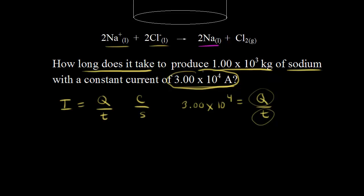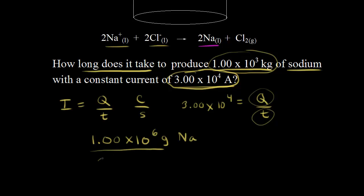Let's find the charge. We start with the mass of sodium: 1.00 × 10³ kilograms, which equals 1.00 × 10⁶ grams. Next, we find the moles of sodium by dividing by the molar mass of sodium, which is 22.99 grams per mole. The grams cancel out and we get moles of sodium.